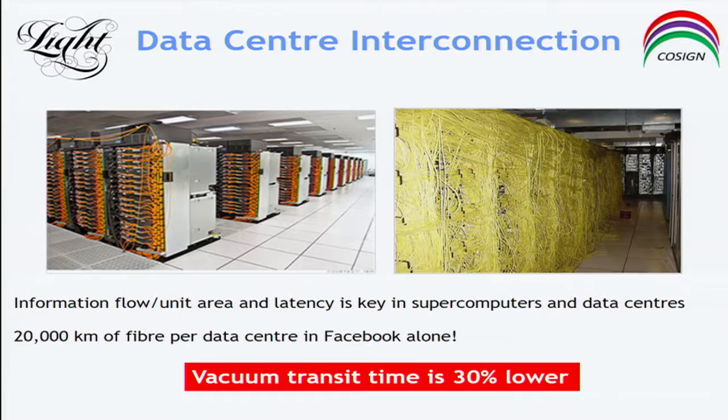The data centers: people really worry about the transit times between machines. There's 20,000 kilometers of fiber per data center in Facebook alone. And a 30% advantage by traveling in air or vacuum is a big advantage.